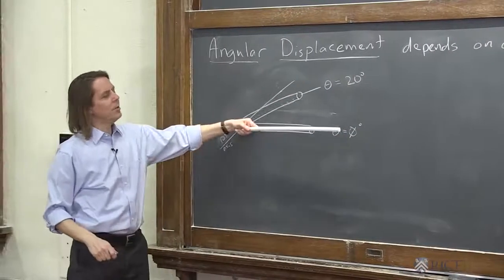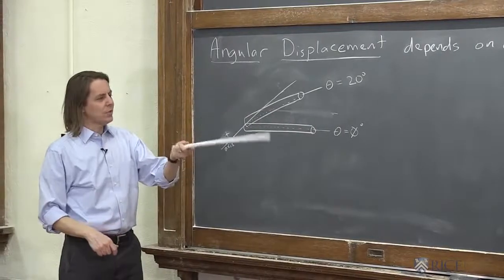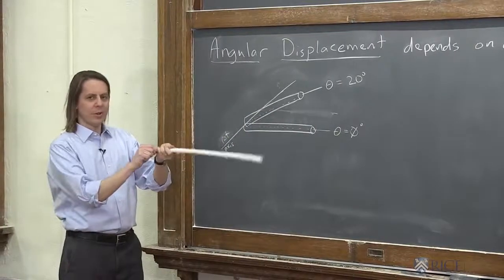So that's a displacement. We went from one position, one angular position, to another angular position. But that 20 degrees describes this kind of a motion about this axis.